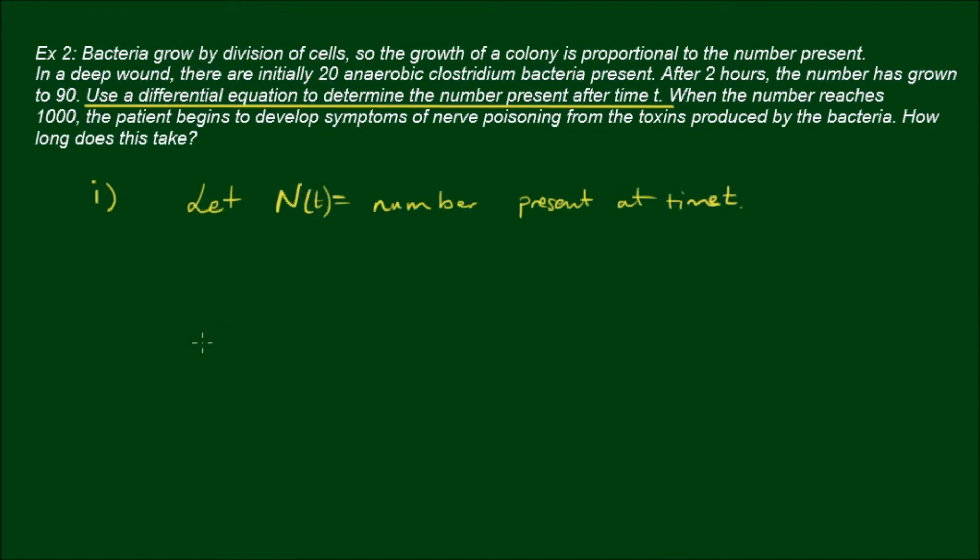The rate of growth or the rate of change of N, dN/dt, is proportional to the number present. It's proportional to what's already there. We can write this relationship as dN/dt equals some growth factor k times N. We can separate this now: dN/N equals k dt. Integrate both sides.